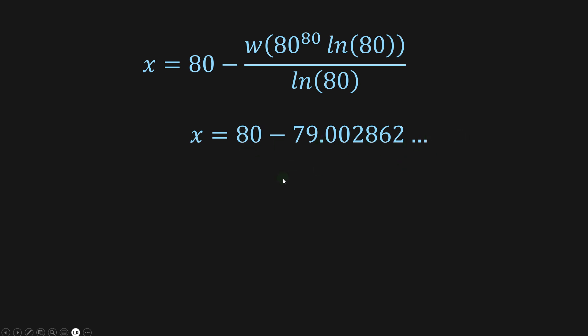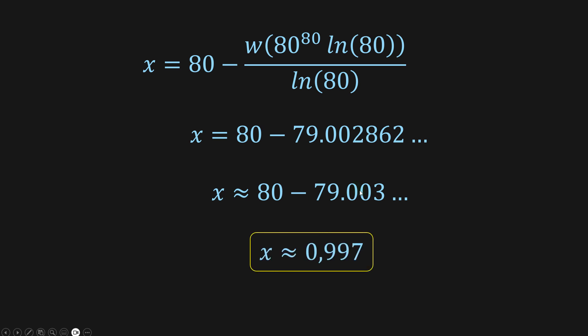Taking the difference of those two terms and making some approximation — I just repeated it with three digits here — we get that x is approximately 0.997. That's the approximate solution for this problem. Now let's do a check.